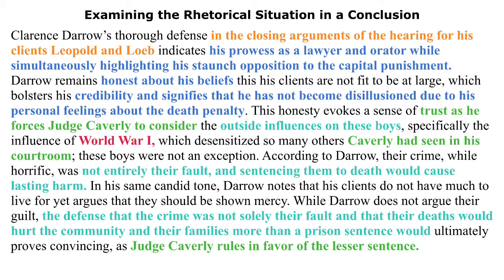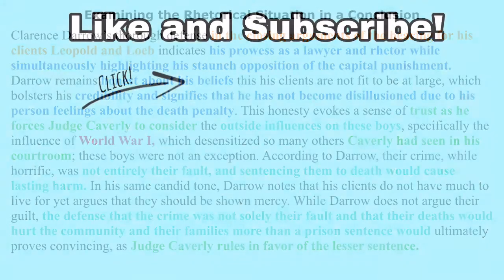Here I started talking about his prowess as a lawyer and how the argument highlights his staunch opposition to capital punishment, showing his honesty about his beliefs while also showing that he's not disillusioned. For the rest of the paragraph, I mentioned things I had already talked about in my essay, but I made sure to reference the major points — specifically the impact on the audience and the major points of Clarence Darrow's argument. He had multiple movements in his argument, so I wanted to address all of them in the conclusion because they all worked together to form this really strong closing argument. At the end, I talked about how it was convincing, because we know from the prompt that the judge did rule in favor of the lesser sentence.